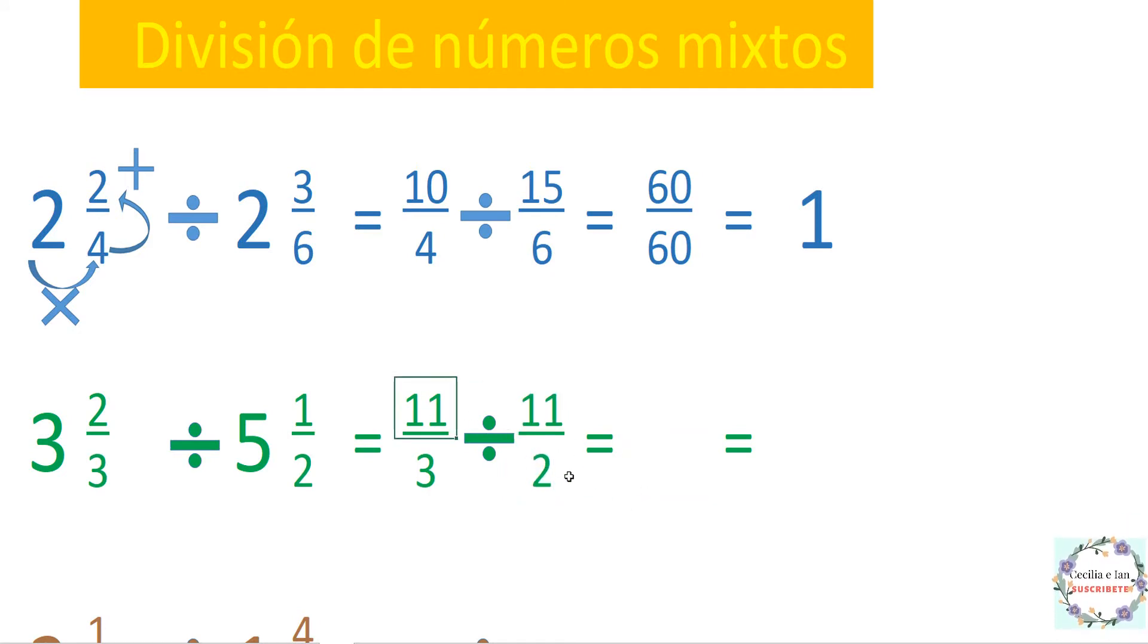Ahora multiplicamos el de arriba por el de abajo y lo ponemos arriba: 11 por 2 nos dan 22, y lo ponemos en esta casilla de arriba. Ahora multiplicamos 3 por 11, nos dan 33, y lo ponemos aquí abajo. Ahora vamos a dividir el 22 en el 33. Si tú te fijas los dos tienen 11, entonces vamos a dividir el 22 en el 11: 22 entre 11 nos dan 2. Ahora dividimos el 33 en el 11: 33 entre 11 nos dan 3. Y aquí tenemos nuestro resultado que son 2 tercios.